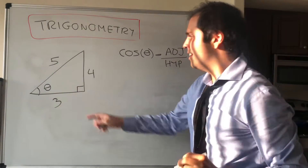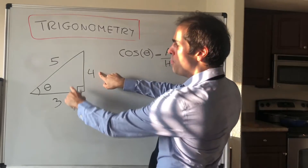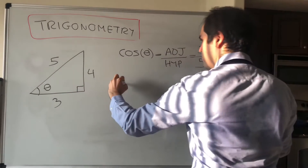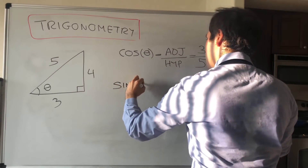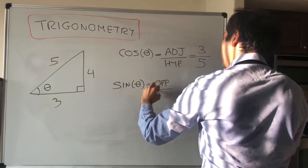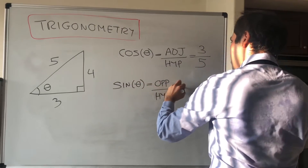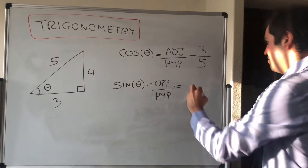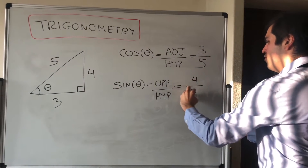And then there is sine, which is opposite over hypotenuse, which in this case would be 4/5.